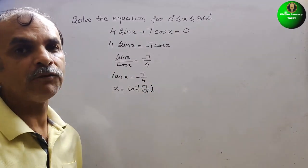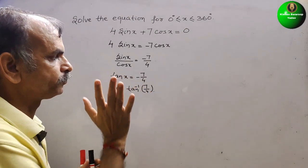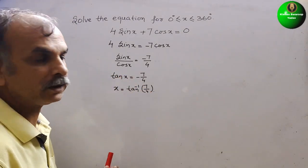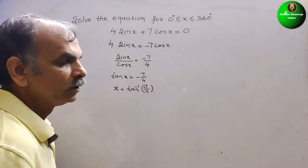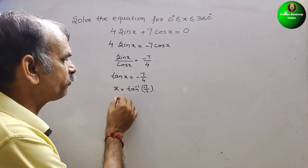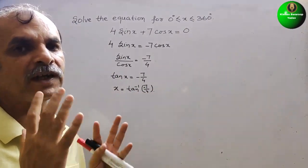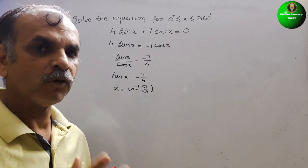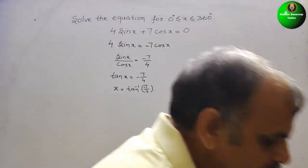So now we will find out the value of this. This is not 7 by 4, this is minus 7 by 4. So now we will find out the value of x with the help of a scientific calculator.